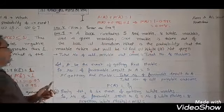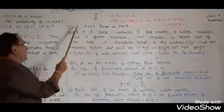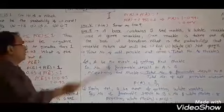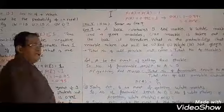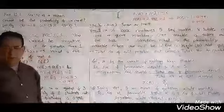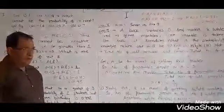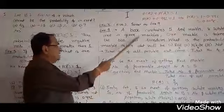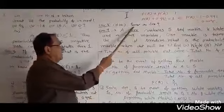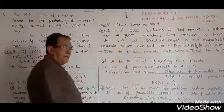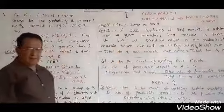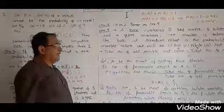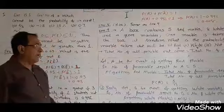Therefore, P(A) equals 1 minus 0.992, which equals 0.008. That is your answer. Example number 8 is also given for you as homework — try it yourself. It is just like Example number 9, same as Example number 9, so I have taken Example number 9.